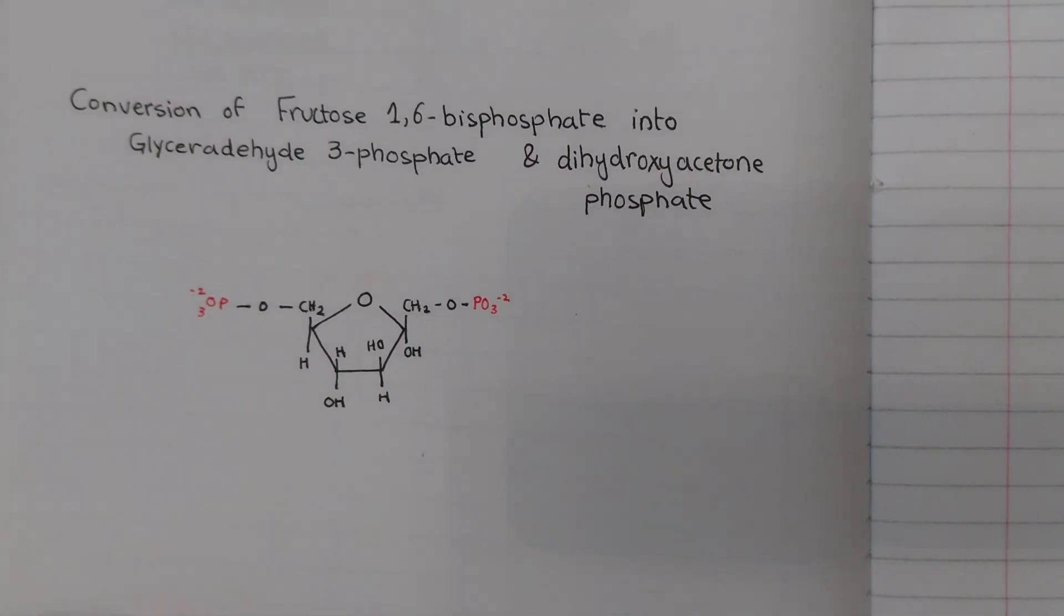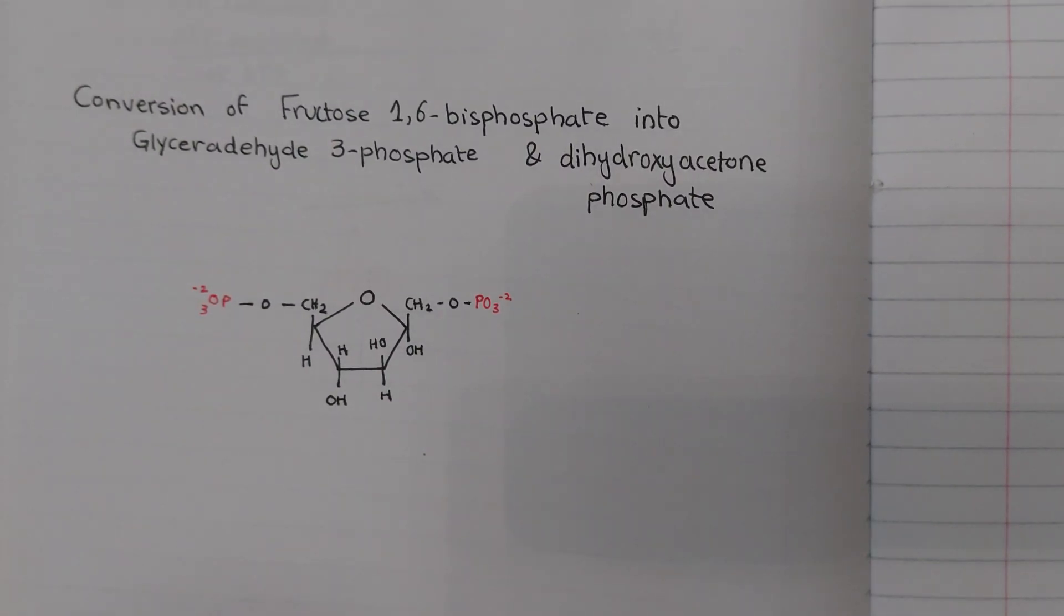Hello everyone, so today we will be discussing how fructose 1,6-bisphosphate is converted into glyceraldehyde 3-phosphate and dihydroxyacetone phosphate. This conversion occurs in glycolysis.